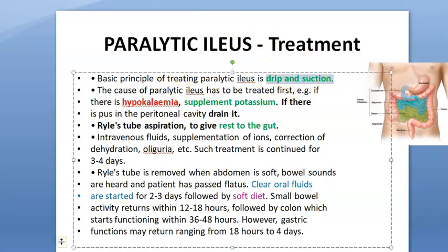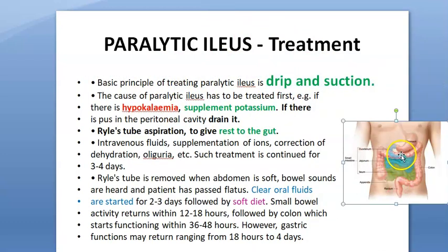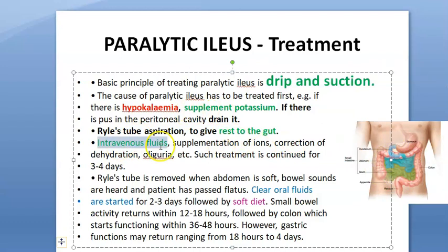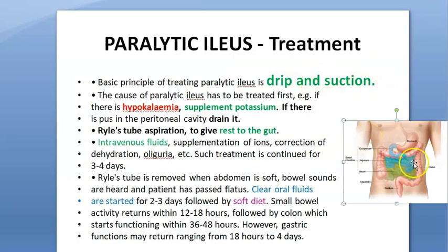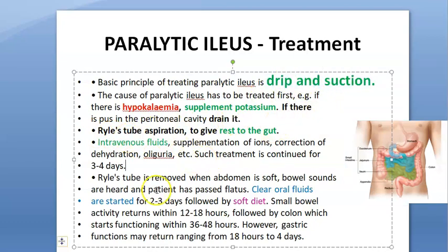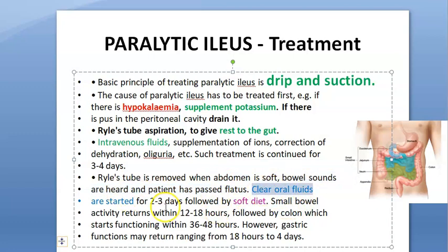Treatment is drip and suction. IV fluids are given and a Ryle's tube is inserted to rest the gut by aspiration. The patient receives nutrition parenterally via drip, while Ryle's tube suction removes whatever is in the stomach or intestine to allow rest. If hypokalemia is present, give potassium. Remove the Ryle's tube when the abdomen is soft, bowel sounds are heard, and the patient passes flatus.